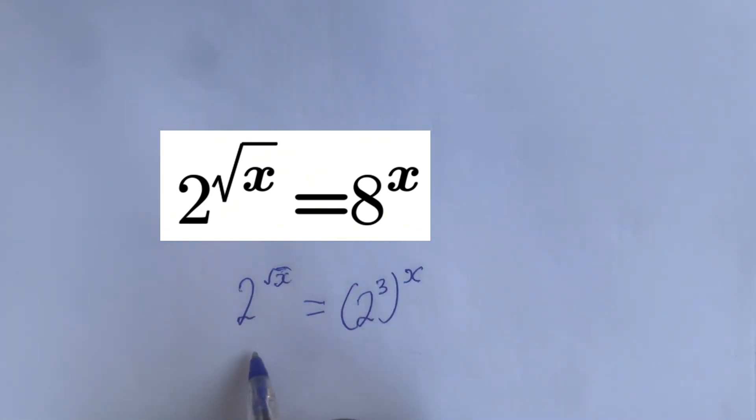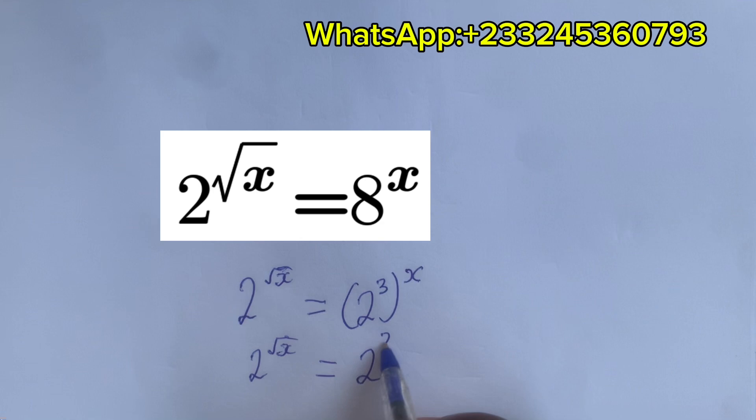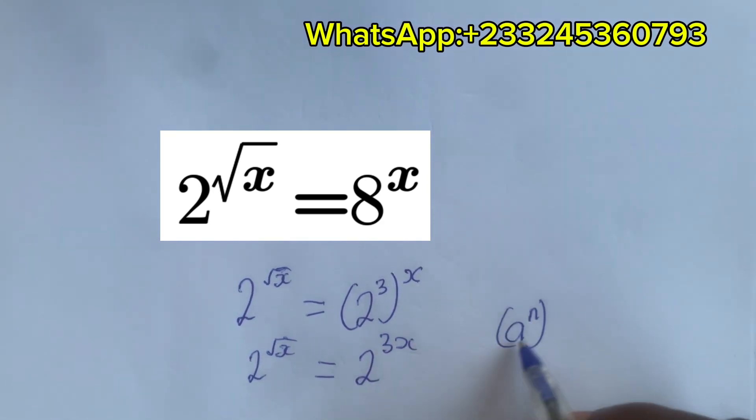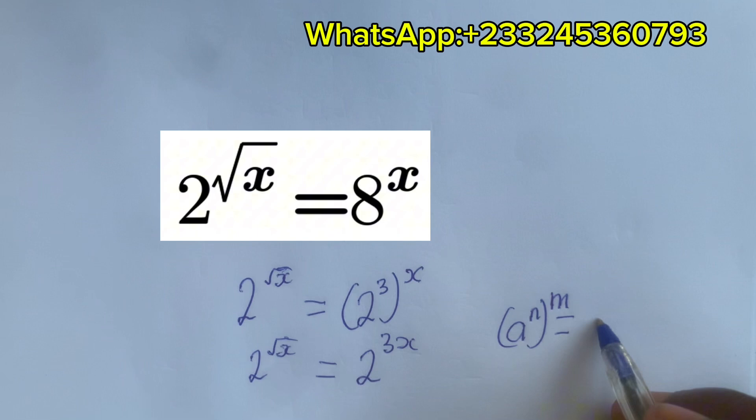Wow! So we write 2^√x equals 2^3x. From the basic law, if I have a^n power m, it gives a^(n×m).